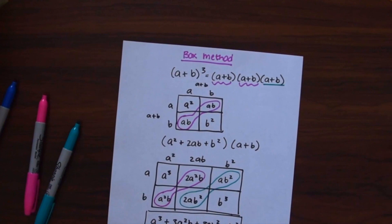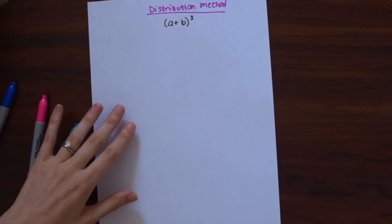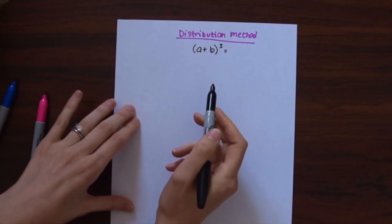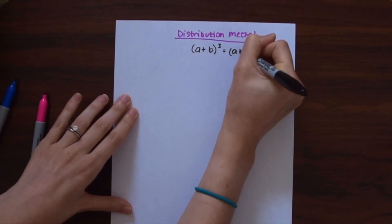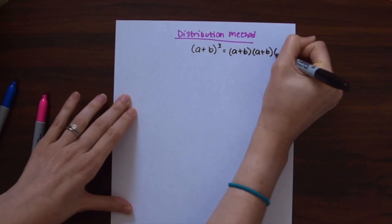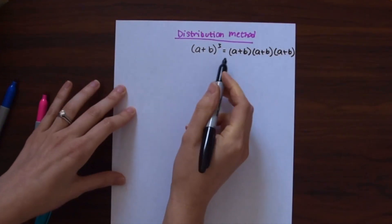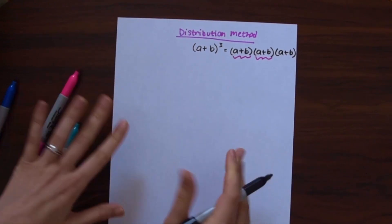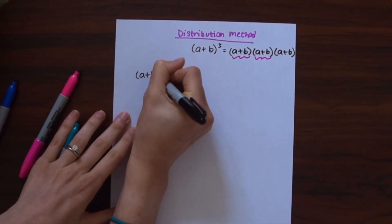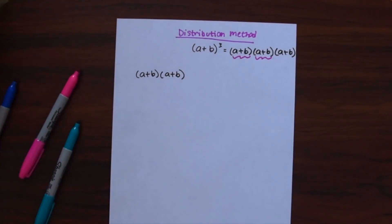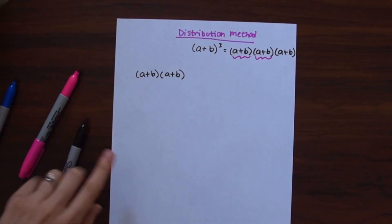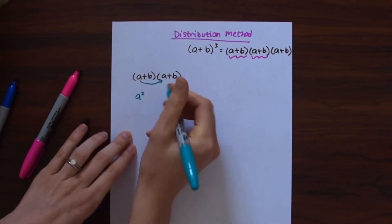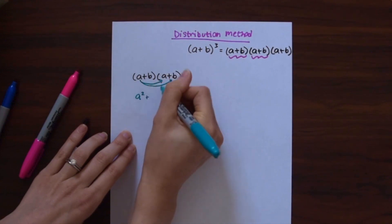So now let's look at another way to solve this — the distribution method. We're going to find the same exact answer but this time we're going to be distributing. The first step is the same: we expand to (a+b) times (a+b) times (a+b), and we focus on the first two, (a+b) times (a+b). For the distribution method we distribute each term and multiply it by each term.